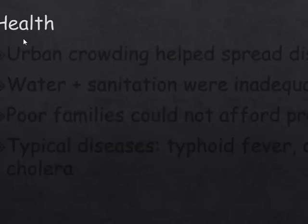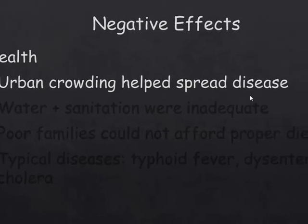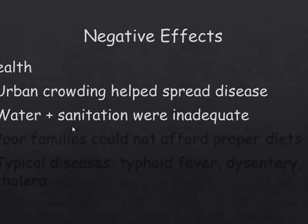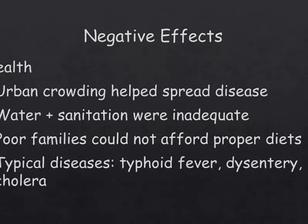Let's talk about people's health as they're living in these large cities. Urban crowding helps spread disease. You've got a lot of people in small places. The water and sanitation were not really adequate for the amount of people, so the water people were drinking was tainted. Some places didn't even have bathrooms, so waste got into the water and people were breathing it. The other issue: poor families really couldn't afford to eat the proper foods to stay healthy. The typical diseases you would find were typhoid fever, dysentery, and cholera.